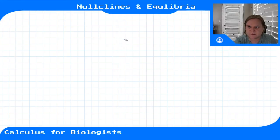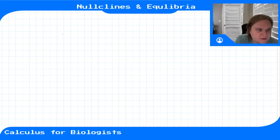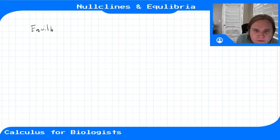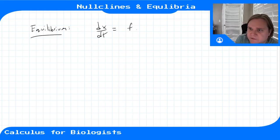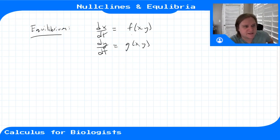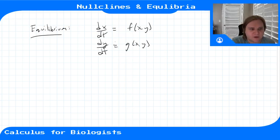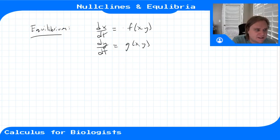To analyze systems of coupled autonomous differential equations, we use what's called nullclines to find the equilibrium points. For a coupled system — dx/dt = f(x,y) and dy/dt = g(x,y) — an equilibrium point is not just a place where one derivative is zero. It has to be a place where both derivatives are zero, because if dx/dt is zero, dy/dt could still change, which would push you away from equilibrium.